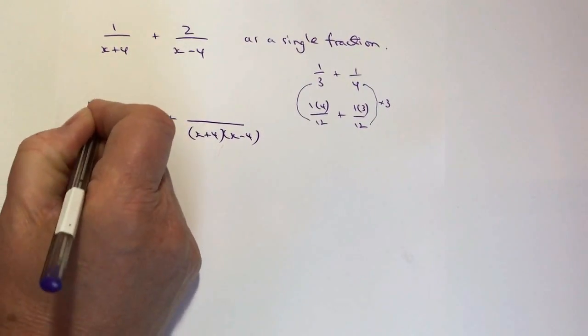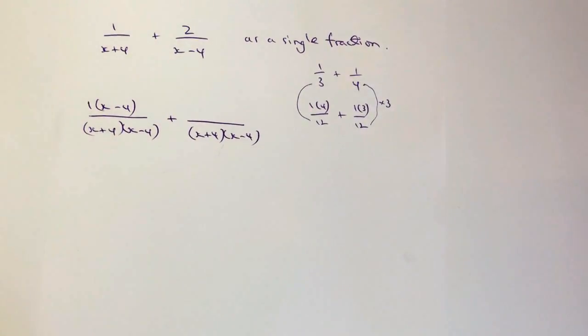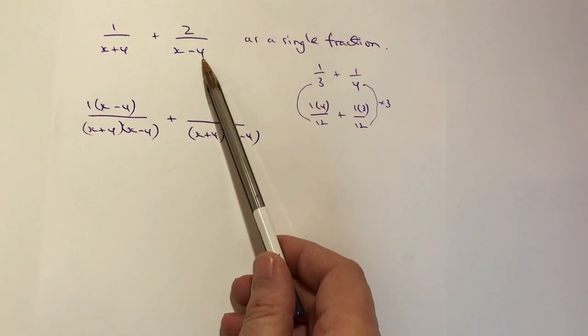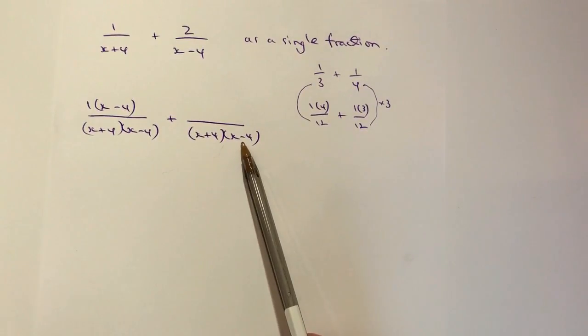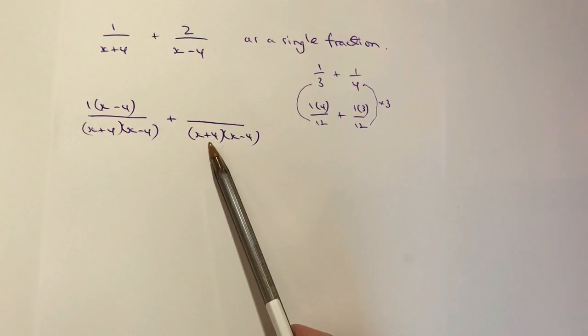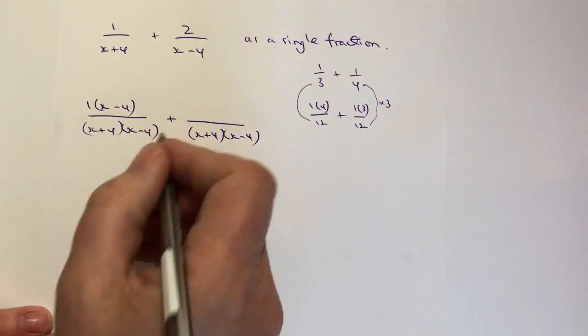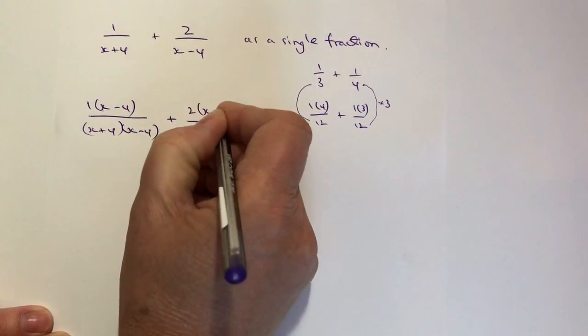And then exactly the same with the second fraction. What have I multiplied x minus 4 by to get x plus 4 times x minus 4? Well I've multiplied it by x plus 4 so I'm going to do exactly the same to the top and I'm going to write that as 2 times x plus 4.